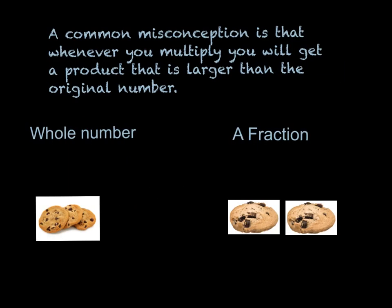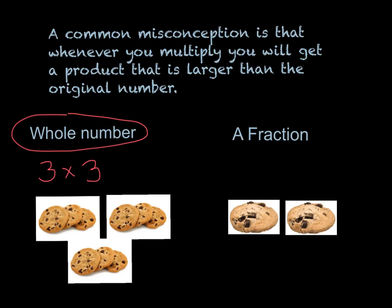A common misconception is that whenever you multiply, you will get a product that is larger than the original number. That only holds true when multiplying by a whole number. So as you can see, we have three cookies. And if I wanted to multiply and get three groups of three cookies, I would indeed get a number that is greater than the three that I originally started with because nine is greater than three.